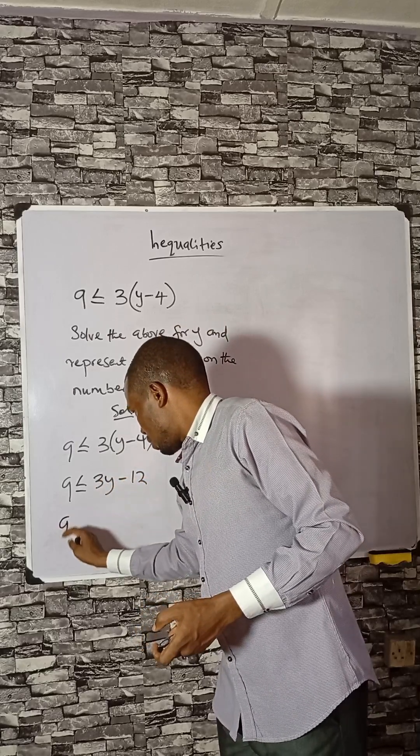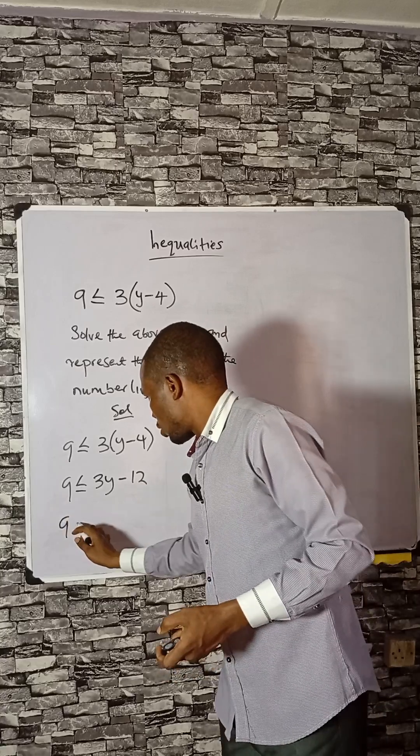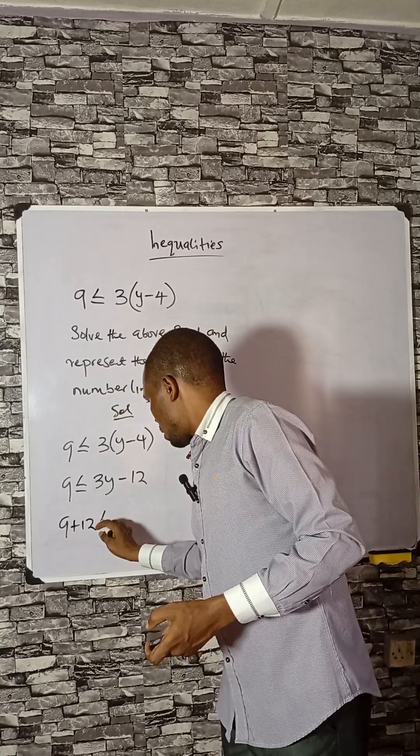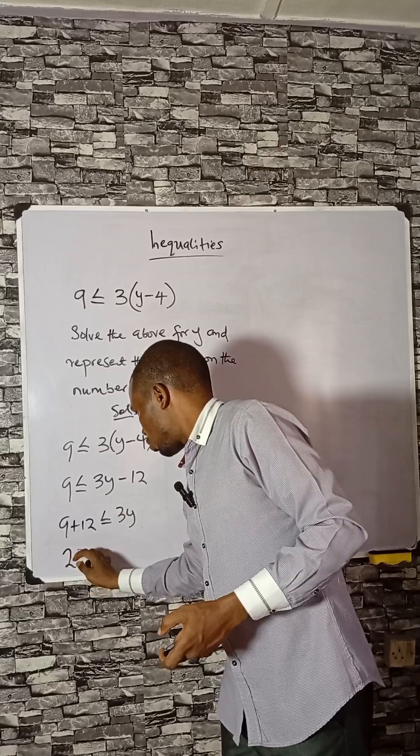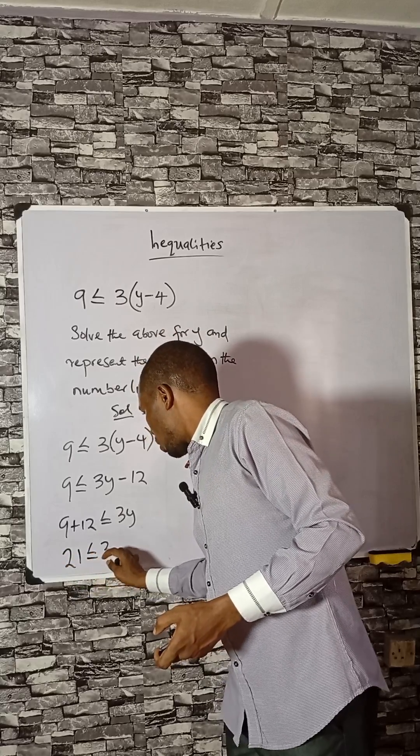Collecting like terms: 9 will cross to the other side and become plus 12, less than or equal to 3y. 9 plus 12 is 21, so 21 is less than or equal to 3y.